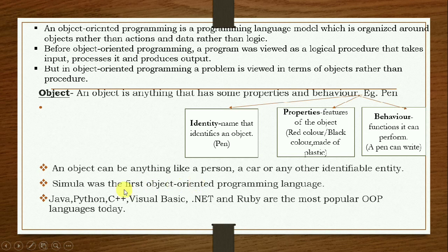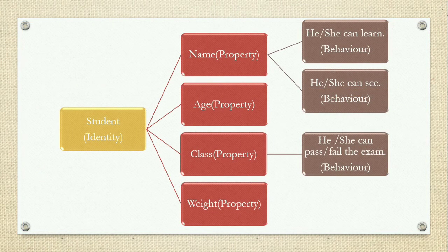The first object-oriented programming language was Simula. Java, Python, C++, Visual Basic .NET, and Ruby are the most popular object-oriented programming languages today. Python, which we are learning, comes under object-oriented programming where the main focus is on objects rather than the procedure. Another example: we have students — this is the identity, that is the name of the object.